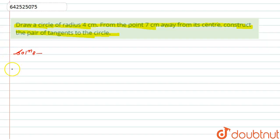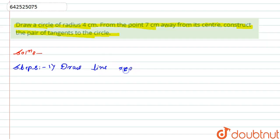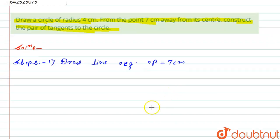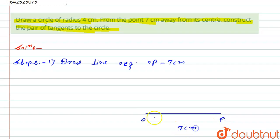I will write the steps for the solution. The first step is to draw a line segment OP which should be equal to 7 centimeters. So this is the line segment OP, and its length is 7 centimeters.